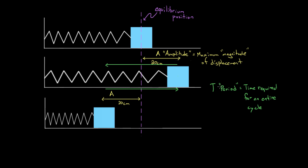The period will be given in seconds. For the sake of making this a little less abstract, let's say the period of this mass on a spring was six seconds. What would that mean? It would mean that it took six seconds for the mass to go from this point and then all the way back to that point, resetting itself.